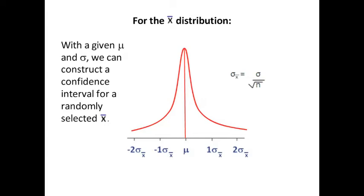In other words, if we know μ and we know the standard deviation of the population, we know σ, we can construct a confidence interval for x̄'s to know that if we randomly take a sample, we are so many percent certain that the mean of that sample will fall into a confidence interval.